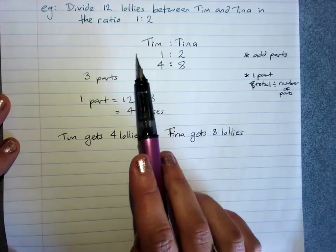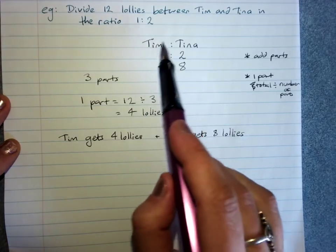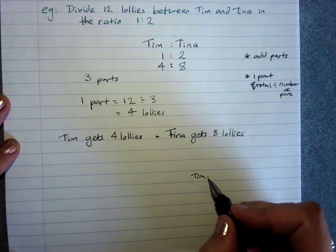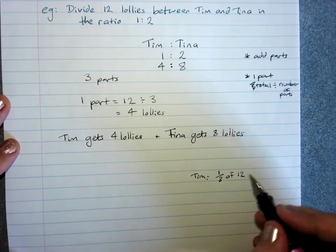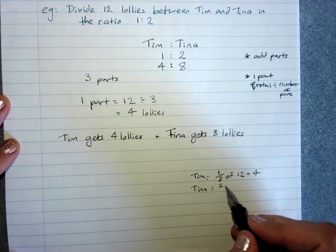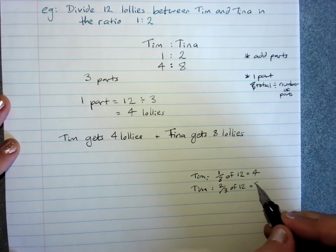I could have done this one as the fractions method. There's three parts, so Tim would get one-third of twelve - a third of twelve is four. And Tina would get two-thirds of twelve - two divided by three times twelve is eight.